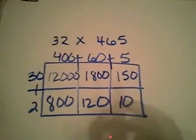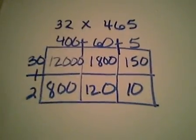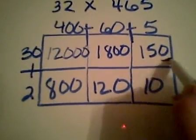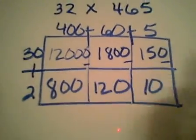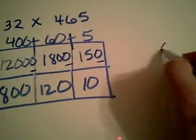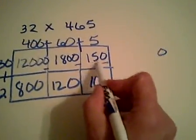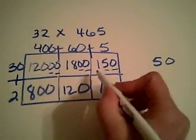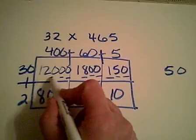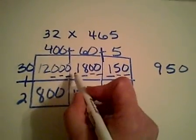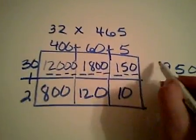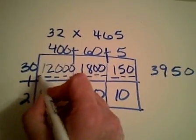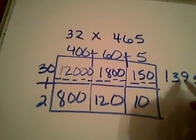Now I'm going to add up the digits, add up the rows. My ones place adds up to be zero. My tens place adds up to be five. My hundreds place adds up to be nine. My thousands place, three. And then my ten thousands place, one.